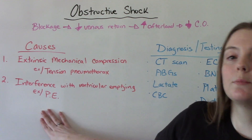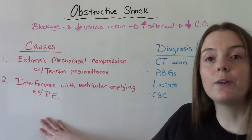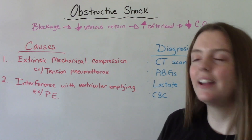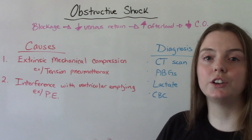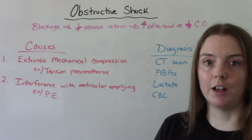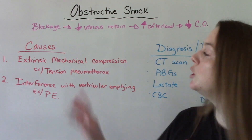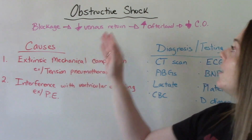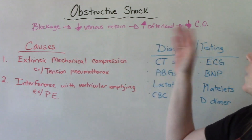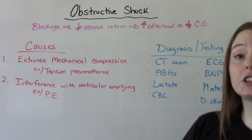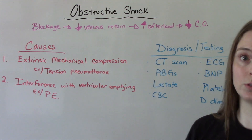Another cause would be something like a blockage like a PE. With a PE, we have a blood clot that gets stuck in pulmonary circulation, and that decreases blood flow — again decreasing venous return. So these two potential causes all end up doing the same thing: they make it so that the heart cannot pump as efficiently and cannot distribute the blood throughout the body the way it's supposed to.